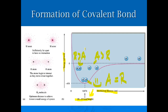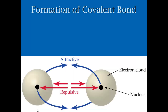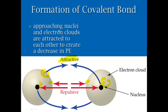The attractive forces are going to be between charges that are different — the protons and the electrons. The repulsive forces come from the same charges: protons repelling each other and electrons repelling each other. That's why we end up with certain bond lengths — it's showing how the bond forms through these attractive and repulsive forces.